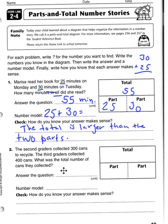And problem number two, the second graders collected 300 cans to recycle. The third graders collected 400 cans. What is the total number of cans they collected?